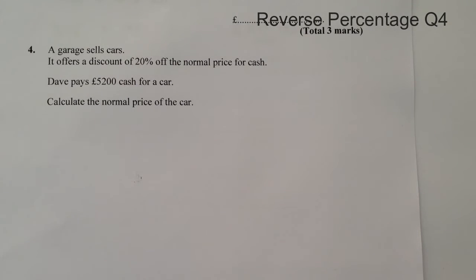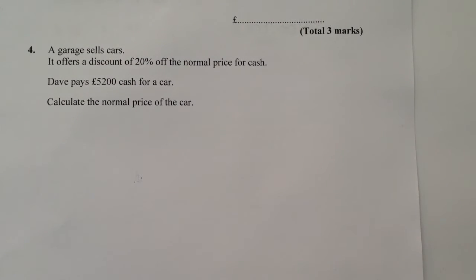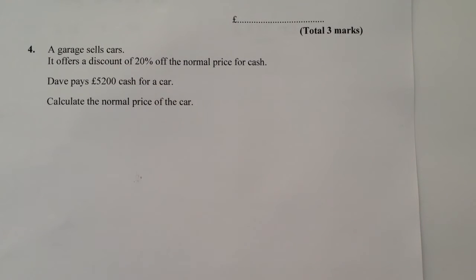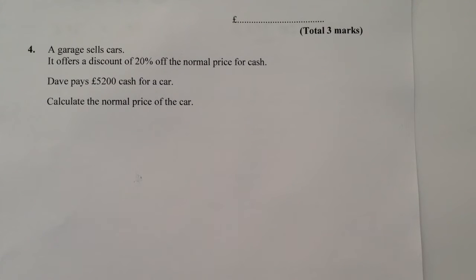Hi, so this is question four on the series of reverse percentages, where we're taking, in this particular case, a 20% discount from the price of a car. In this particular question, Dave has paid £5,200 cash for a car, and what we're being asked to do is to work out the normal price.